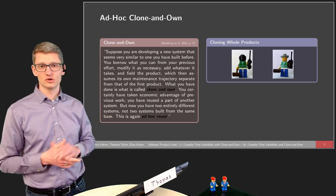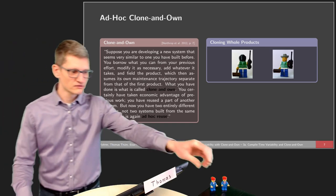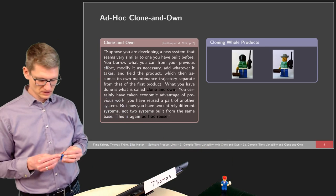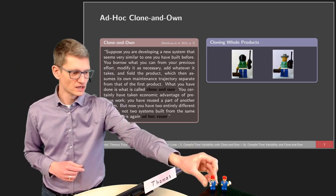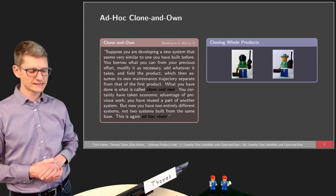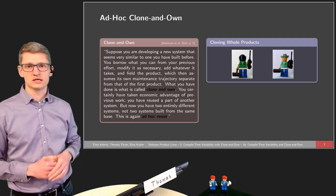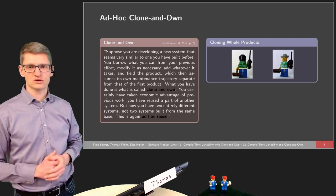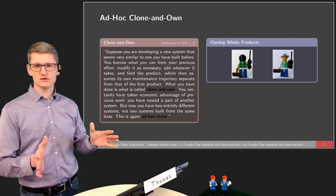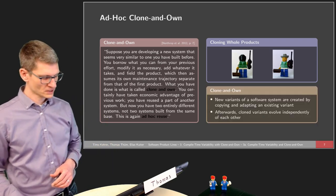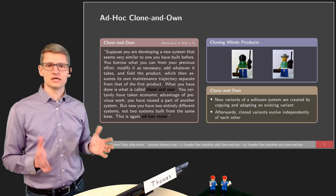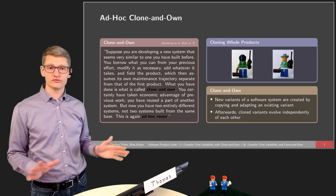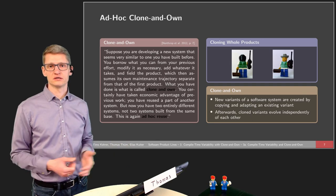In software, it doesn't really make sense to only clone and have identical clones; instead we want some variability in those clones — some slight differences among them. That's why it's called clone and own: we clone a product and then consider it our own, changing and adapting it as we want. This is called ad hoc reuse. The idea is to derive new variants of a software system by copying and adapting an existing variant, after which these cloned variants evolve independently of each other — that's what is meant by owning the cloned variant.